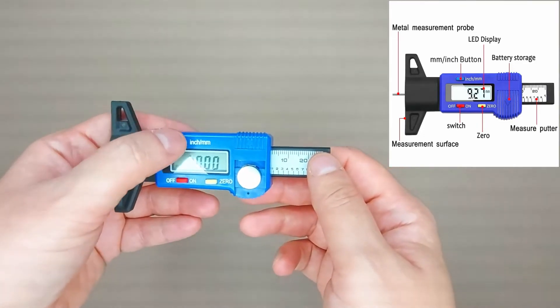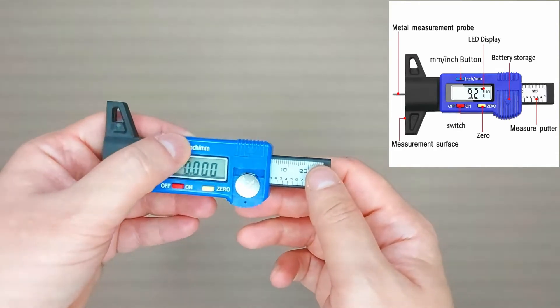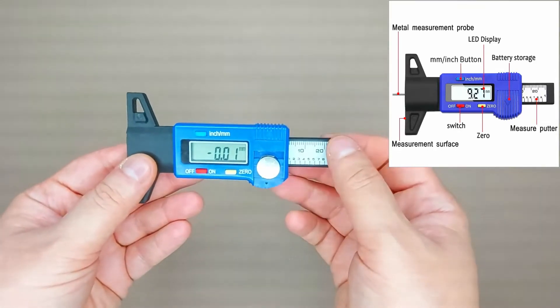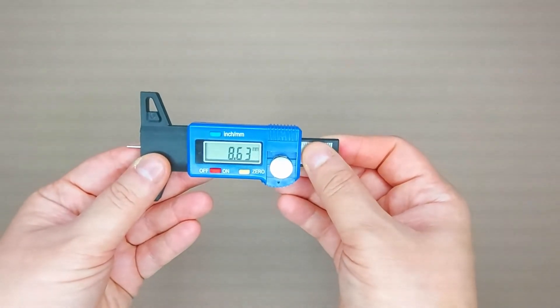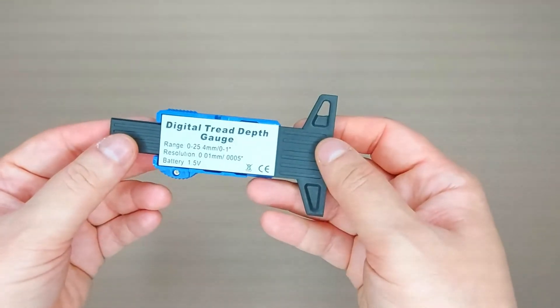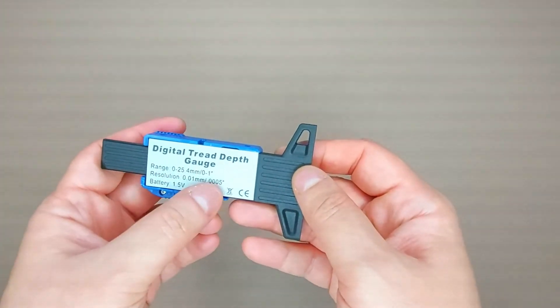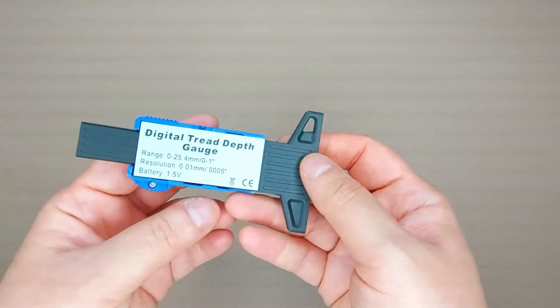And this is to change the measuring unit from inches to millimeters. You zero it out like this, then you can measure the tire treads. On the back, just information about the range and the battery type, which is 1.5 volts.